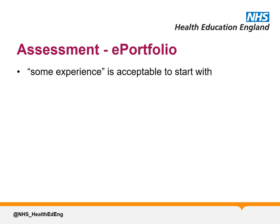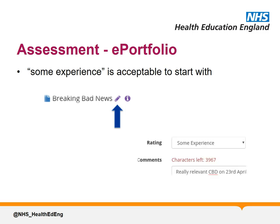Sign off needs to be done first by a trainee doing a self-rating and then subsequently by a supervisor. To sign an item off, open the curriculum and select the pen icon next to the curriculum item. Give your rating and then you can explain why you've given that below with something such as a really relevant CBD on 23rd of April, teaching session certificate and reflection from 4th of September and reflection on case from 13th of January. Your trainer can then complete the sign off under their own login by following the same process and reviewing your evidence.